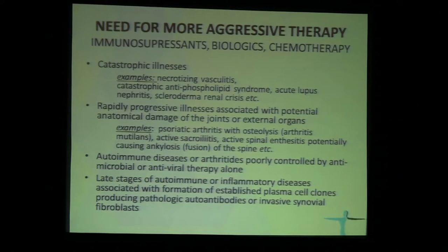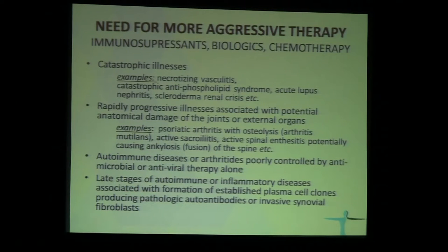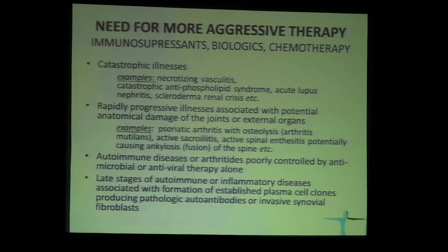There are diseases where symptoms are not controlled by antimicrobial and antiviral therapy alone, requiring heavier therapy. Also, in diseases presenting at late stages, you have patients who have established clones of B cells that proliferate independently of antigenic stimuli, or invasive synovial fibroblasts. In this situation, patients are at risk of losing their function and organ or joint integrity — so you need to be much more aggressive. You can stabilize such patients with immunosuppressants and biologics, then do antimicrobial therapy down the road.